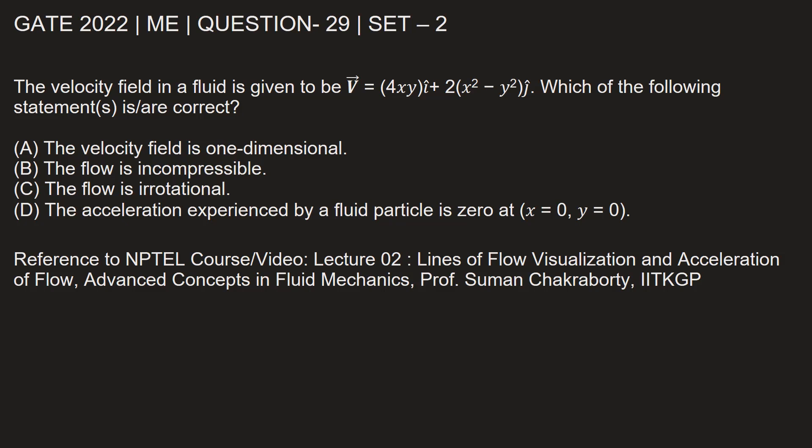Which one of the following statements is or are correct? Option A: the velocity field is one-dimensional. Option B: the flow is incompressible. Option C: the flow is irrotational. And option D: the acceleration experienced by a fluid particle is zero at x equal to 0 and y equal to 0.